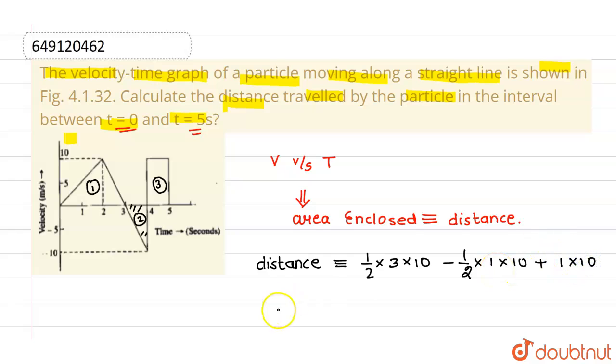So, this will be the total distance. If I calculate this, then I will be having distance equals to 30 by 2 which can be written as 15 minus 5 plus 10. So, this can be written as 20 meters. This is the total distance. This is our answer.